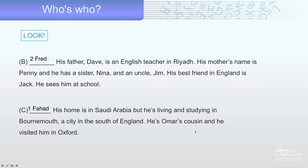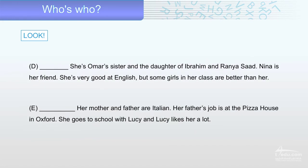The answer is Fahad. Now let's go to D. She is Omar's sister and the daughter of Ibrahim and Rania. Nina is her friend. She is very good at English but some girls in her class are better than her. The answer is Rima.